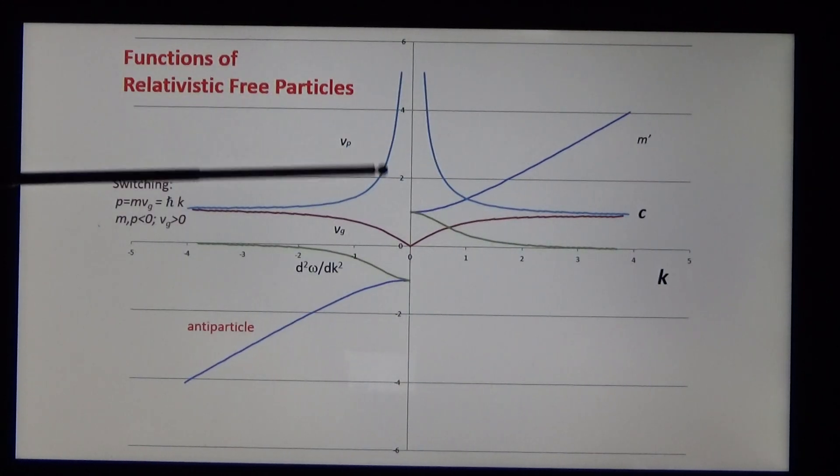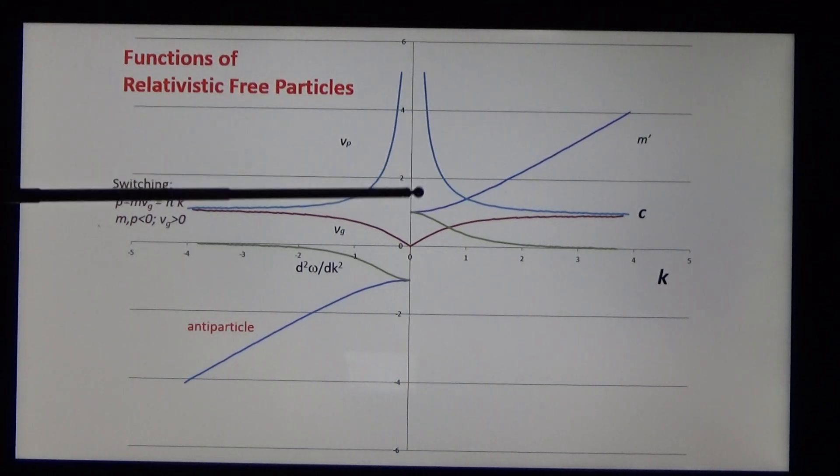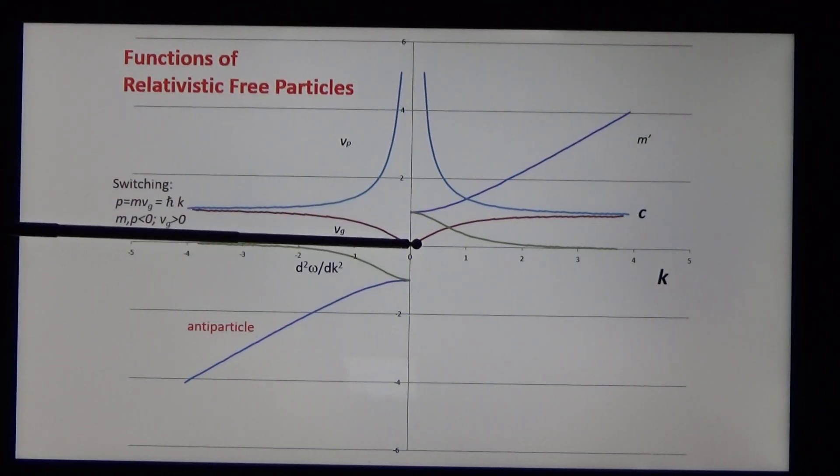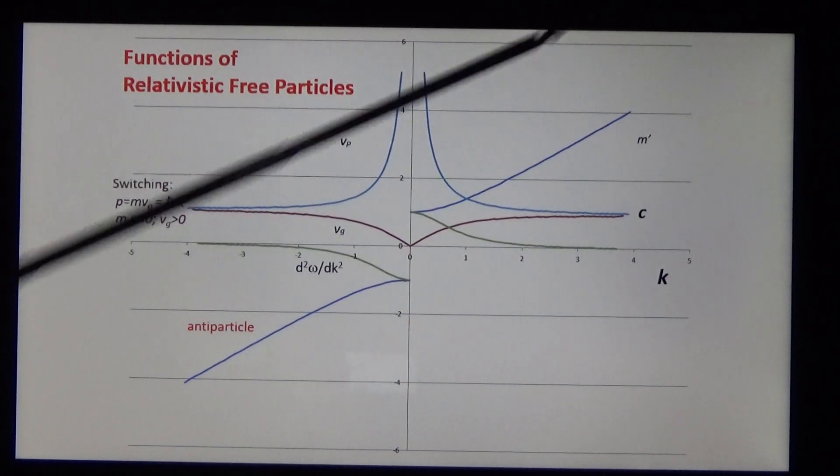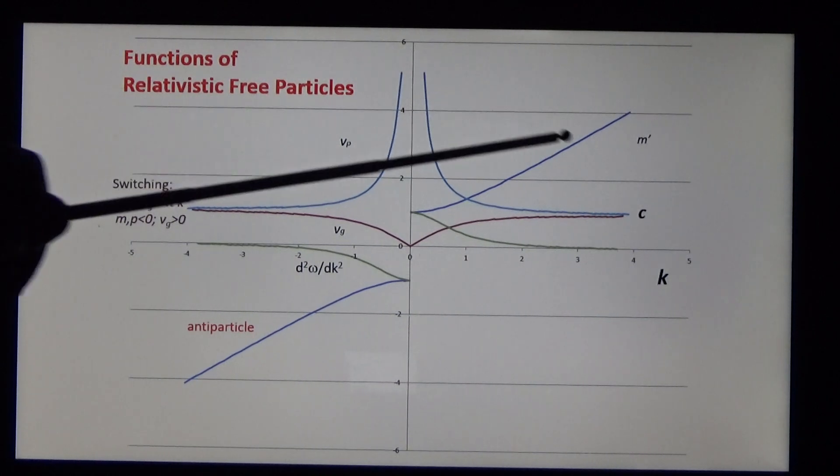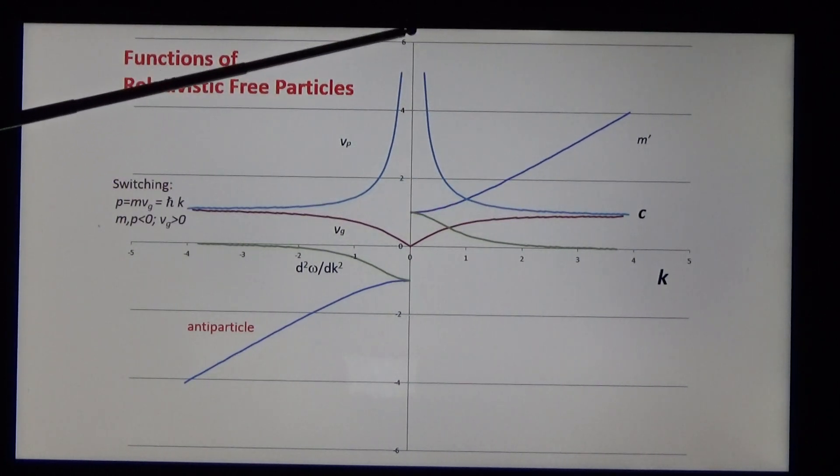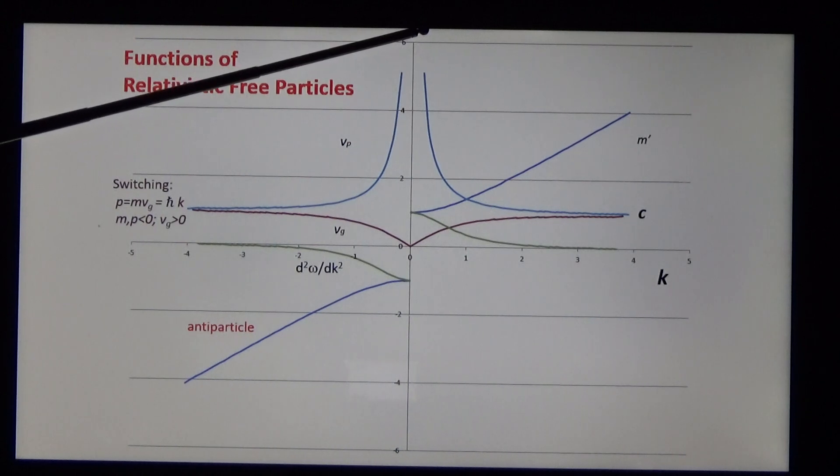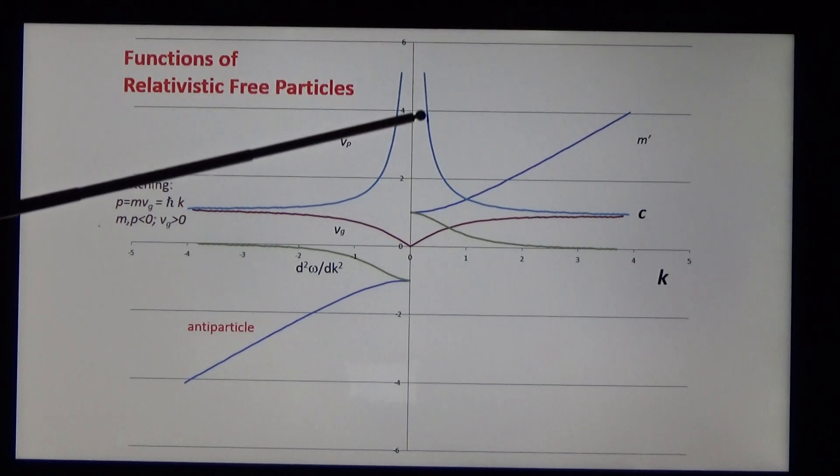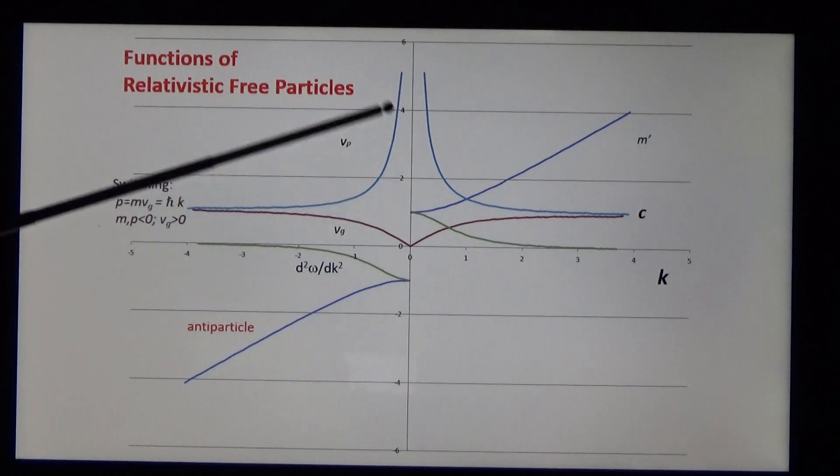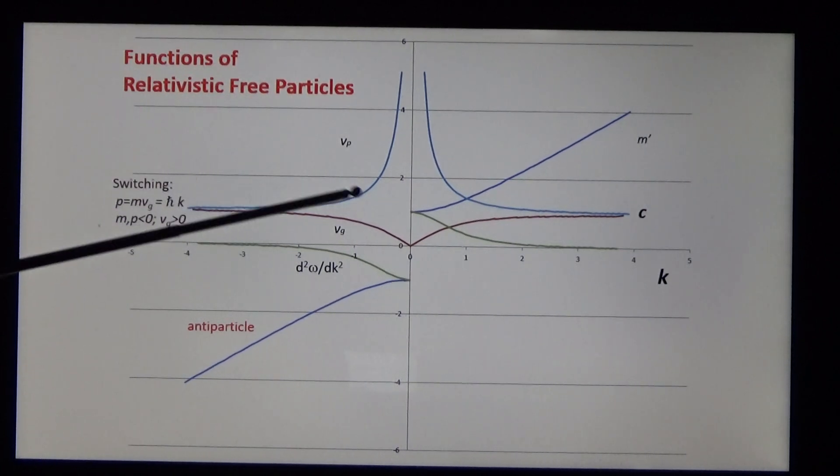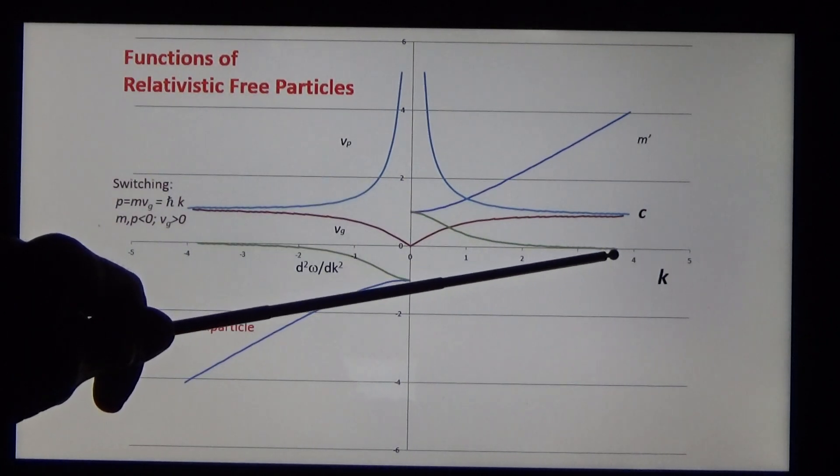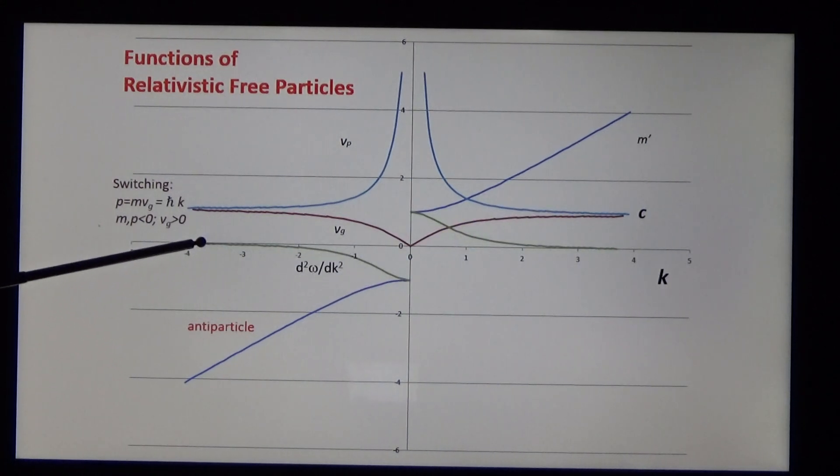Here's the dispersion for a free particle. The group velocity is exactly the same as you note in relativity, tends to c at high k. Meanwhile, the phase velocity is faster than the speed of light. It's singular in the rest frame, showing that here time is Newtonian within the convergence sigma. Meanwhile, the second derivative is always positive, unlike the antiparticle where it's negative.